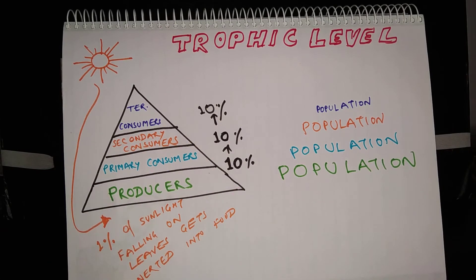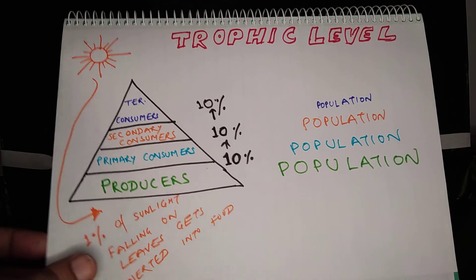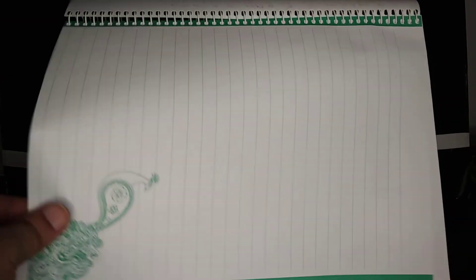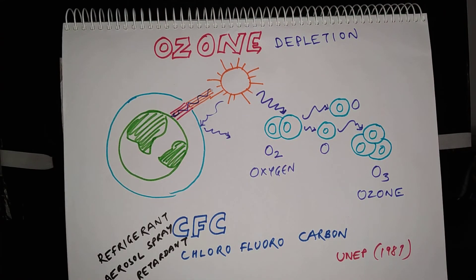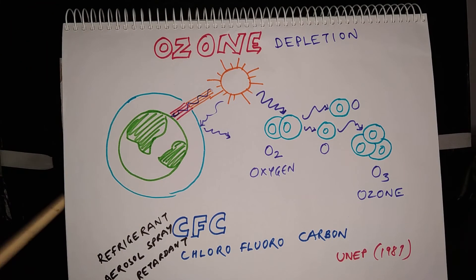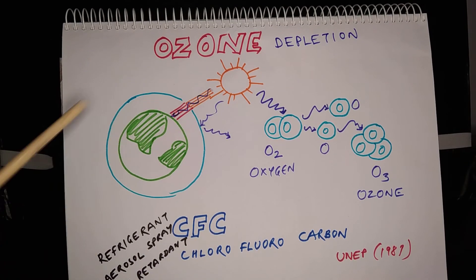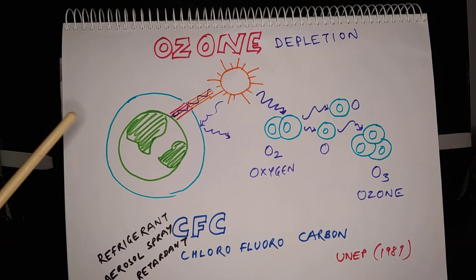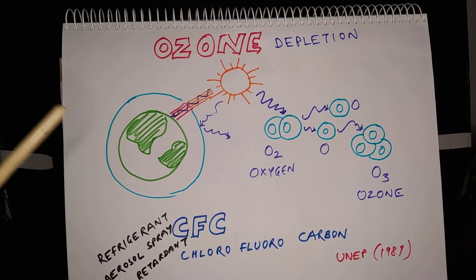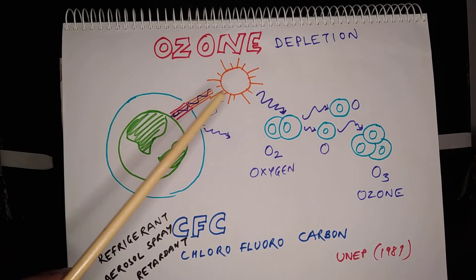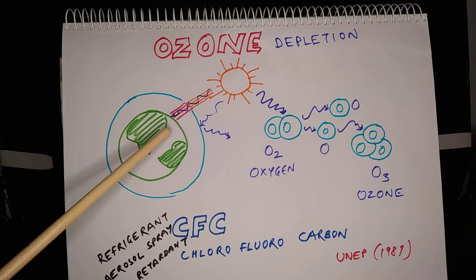And that is how the ecosystem works. Now let us talk about ozone depletion. Ozone is present in the stratosphere of the atmosphere, and that is why the stratosphere is also called the ozone layer. The ozone layer plays an important role — it prevents harmful ultraviolet radiations from entering the earth's surface.